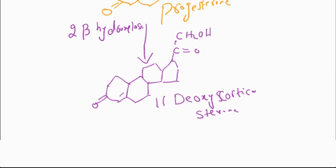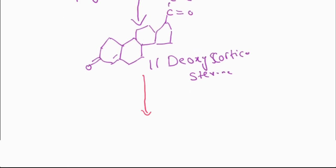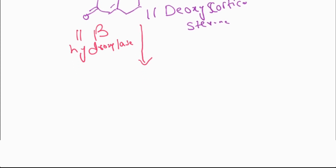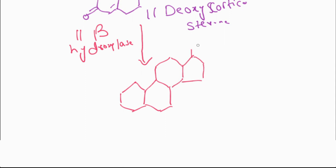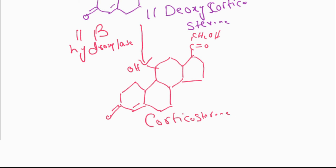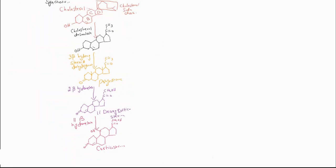The last step in the synthesis of corticosterone is that 11-beta-hydroxylase enzyme causes the conversion of 11-deoxycorticosterone into corticosterone. This is the structure or chemical formula of corticosterone. This is all about the synthesis of corticosterone.